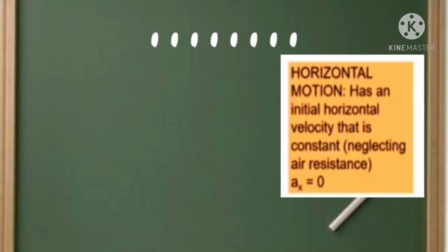Has an initial horizontal velocity that is constant, neglecting air resistance. Acceleration X equals zero.